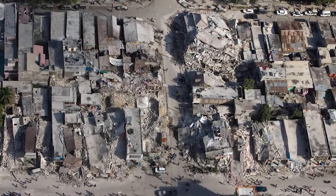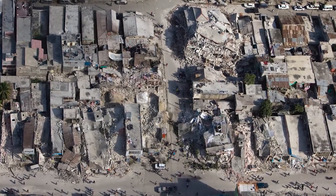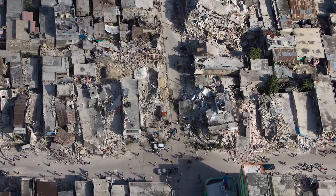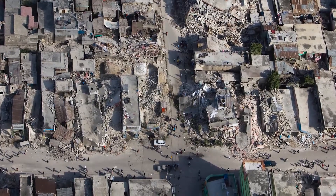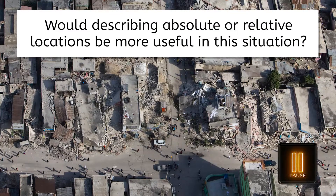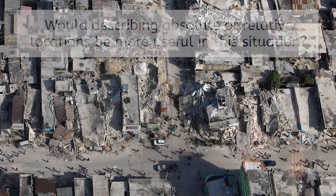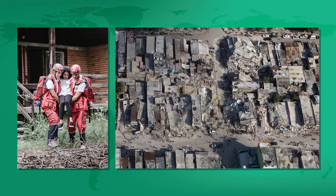But why does the difference between absolute and relative location matter? Imagine you're a geographer working with first responders after a major earthquake. You need to quickly identify locations where help is needed the most. Would absolute or relative locations be more useful? If you said absolute location, you got it. Precise coordinates or street addresses would direct relief teams to specific locations efficiently and accurately.